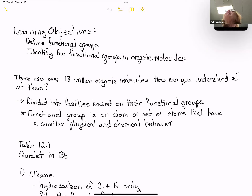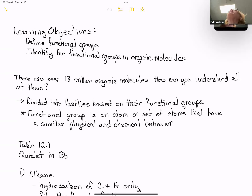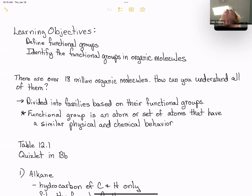As mentioned in the previous video, there are 18 million organic molecules. If we were to look at each individual molecule by itself, it would be very difficult to understand all the possible chemical reactions that molecule would undergo, and then understand all the possible reactions the next molecule would undergo — it would be too enormous to even contemplate. But what we can do is look at the structures of these organic molecules, which can be divided based on those structures, called functional groups. A functional group is an atom or set of atoms that have a similar physical and chemical behavior.